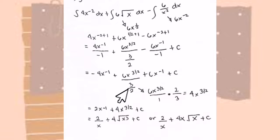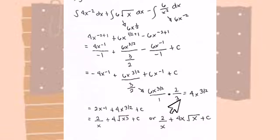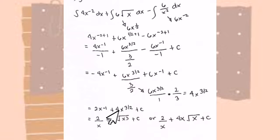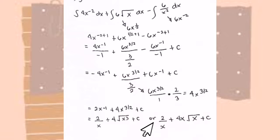To simplify 6x raised to 3 halves over 3 halves, we multiply by the reciprocal: 6x raised to 3 halves times 2 thirds. Cancel 6 and 3 — 3 becomes 1 and 6 becomes 2 — giving 4x raised to 3 halves. To remove the negative 1 exponent from 2x raised to negative 1, it becomes 2 over x. Then plus 4x raised to 3 halves, which is 4 square root of x cubed, simplifiable to 4x square root of x. So the final answer is 2 over x plus 4x square root of x plus C.